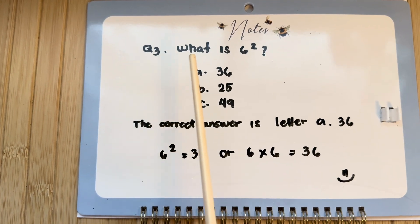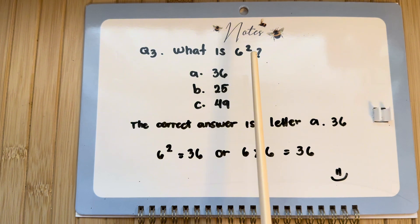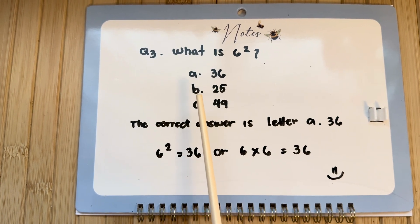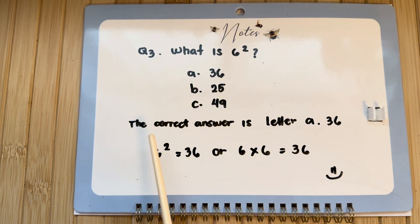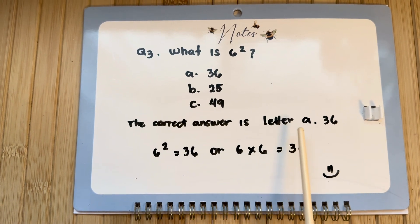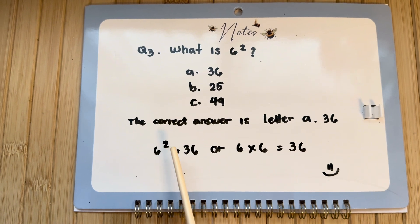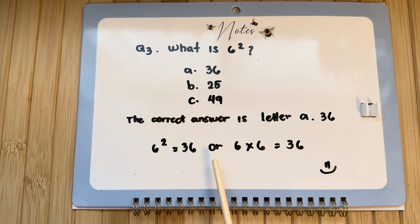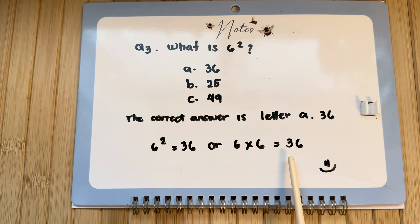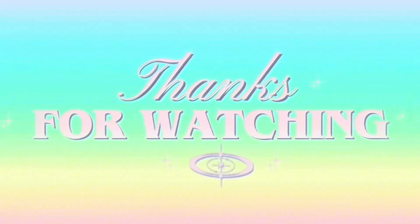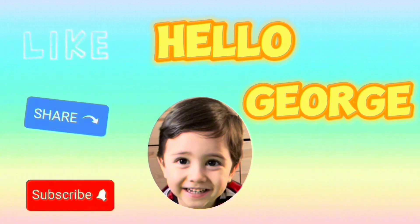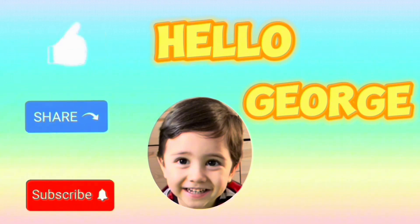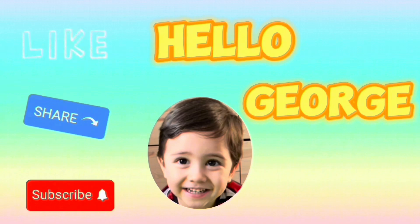Question number 3: What is 6 squared? Is it letter A, 36? B, 25. Or C, 49? And the correct answer is letter A, 36. 6 squared is equals to 36, or 6 times 6 is equals to 36. Thank you for watching. Please don't forget to like, share, and subscribe to Hello Church, and hope to see you again next time.